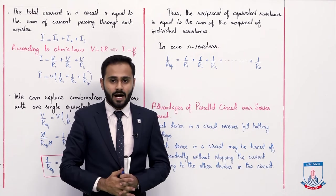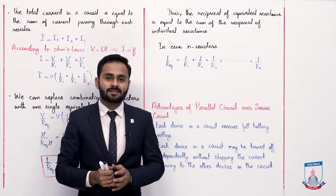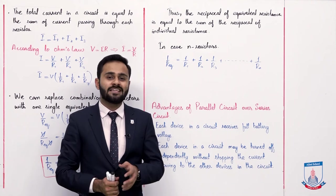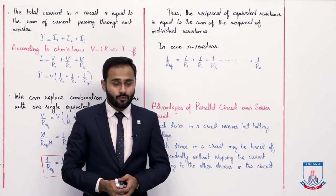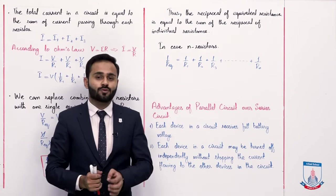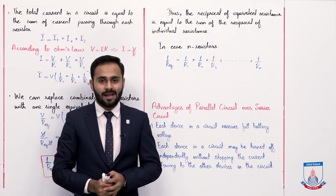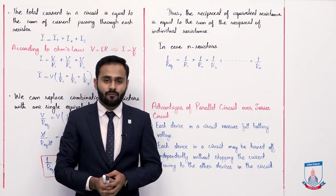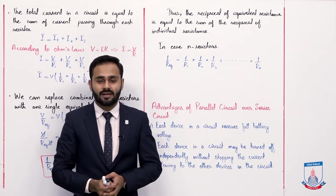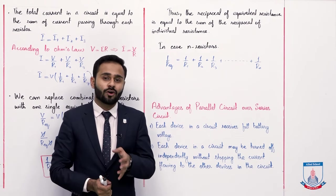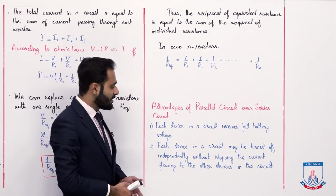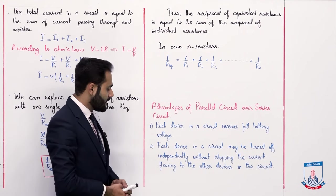Advantages of parallel circuit over series: First, each device in a circuit receives full battery voltage. Let's suppose that battery supplies 220 voltage. We have discussed parallel mein voltage same hote hain, toh har device ko battery ke poore voltages supply ho jate hain aur is tarah se har jo device hai wo full voltage receive karta hai. Clear?